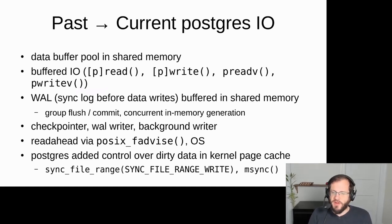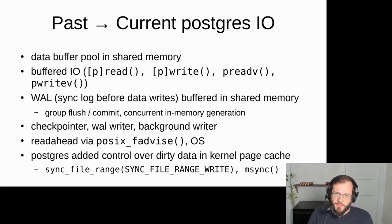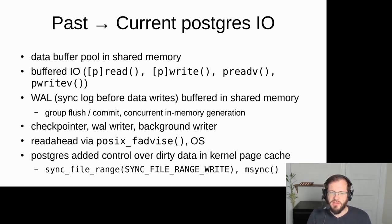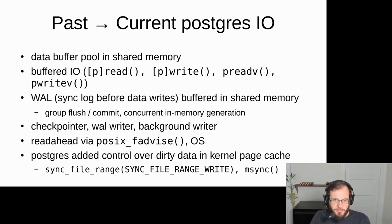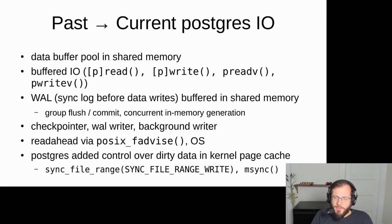For durability, Postgres uses a fairly standard write-ahead log approach. Whenever data from the buffer pool has to be written out, it must first synchronize the log to disk before writing out the data. Over time we've improved this design — we have group commit, we have the WAL in memory that can be written to concurrently by multiple processes, because that was often a significant bottleneck.